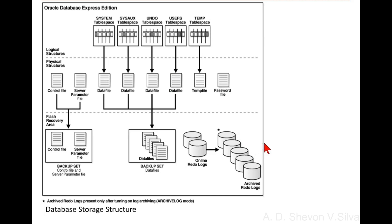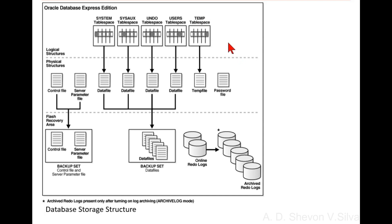In the logical structure, the logical structures are table spaces. Each table space points to a data file or temp file, which are physical structures. Other physical structures include control files, a server parameter file, and a password file. You can see the physical structures include control file, server parameter file, password file, temp file, and data files.